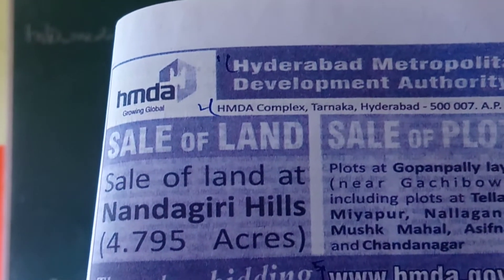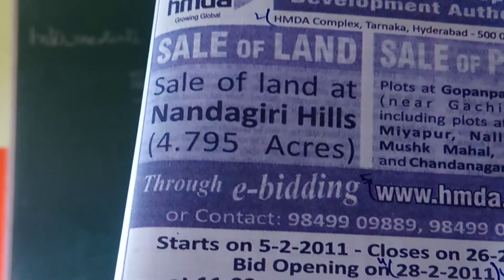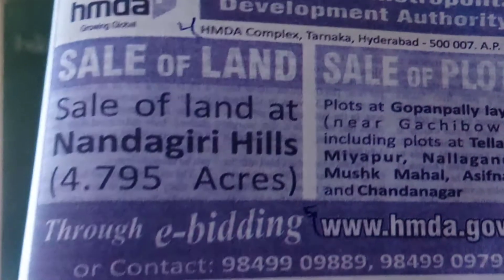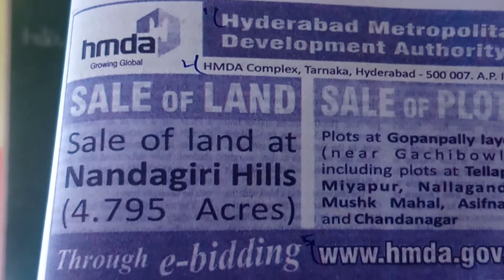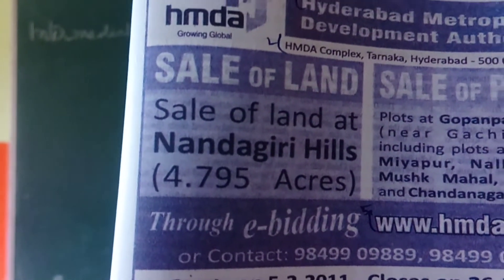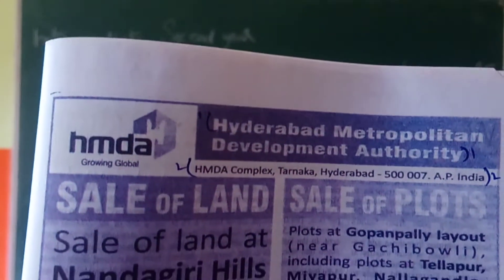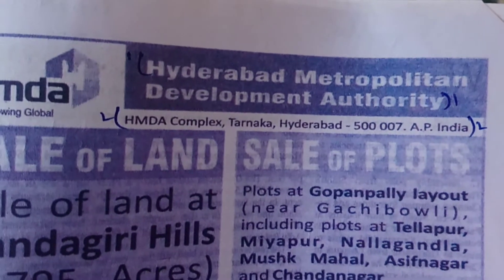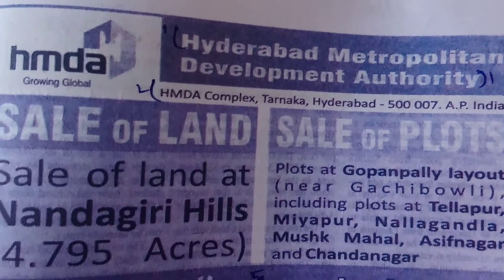They are giving five questions, and we will answer them as one-word answers. First, read carefully and understand the advertisement, then attempt the answers. First question: Expand HMDA — that means, what is the abbreviation HMDA? Already they mentioned in the advertisement: H for Hyderabad, M for Metropolitan, D for Development, A for Authority.